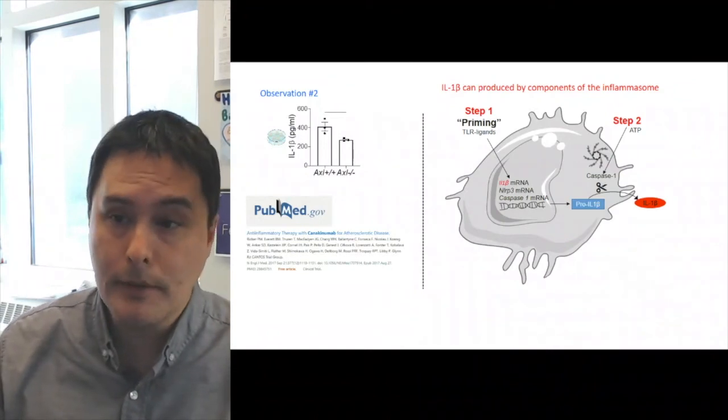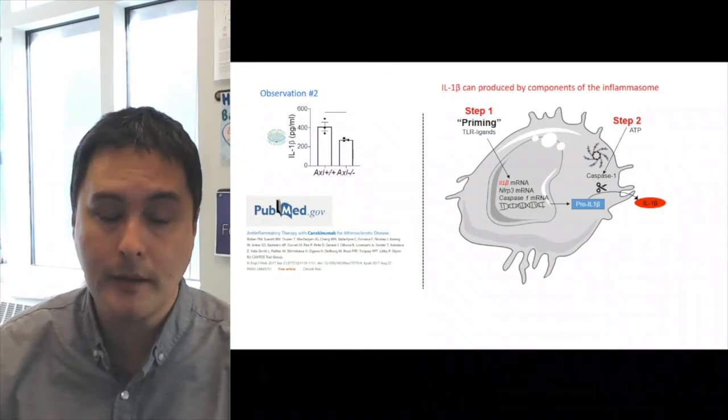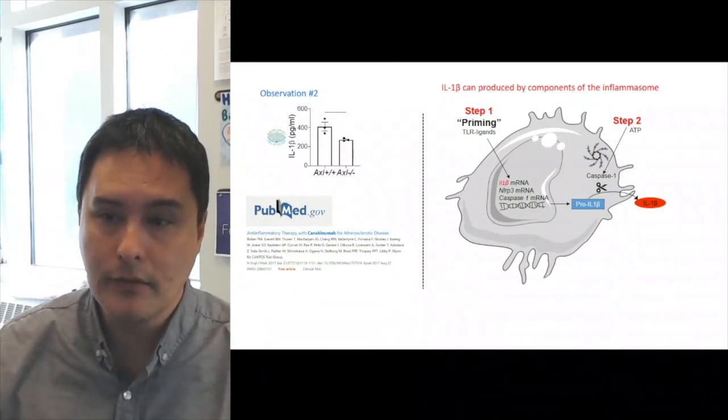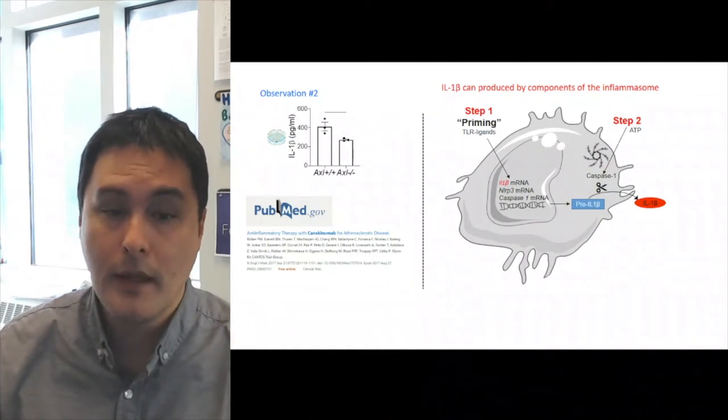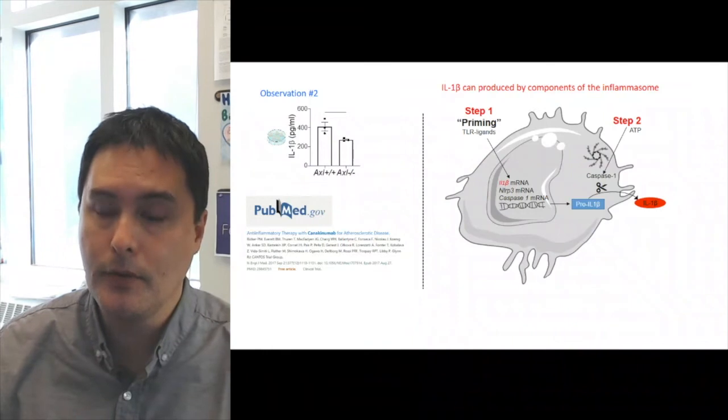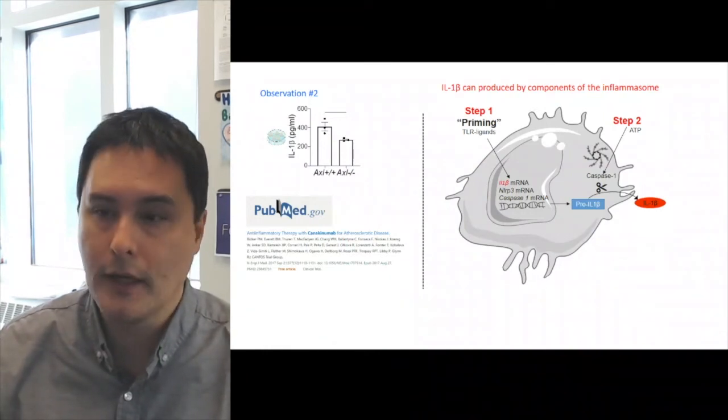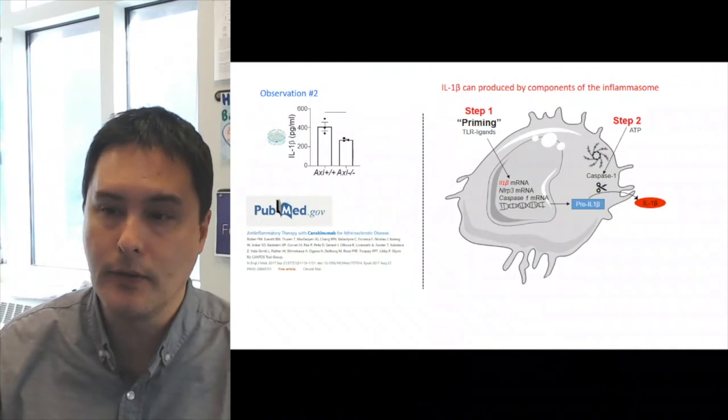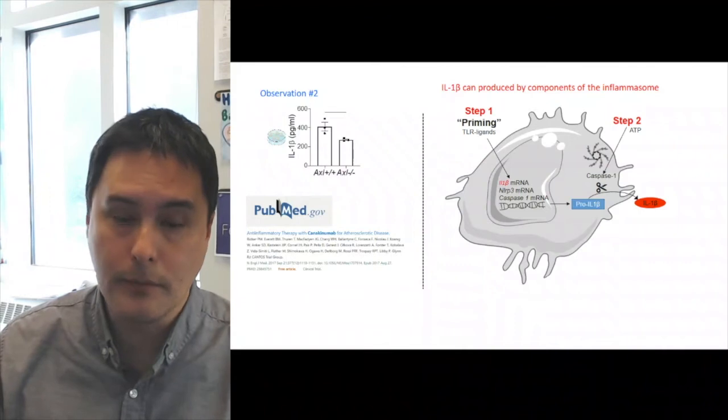IL-1 beta can be produced by components of the inflammasome. This involves two steps. The first which is priming by TLR ligands which can induce the transcription of components of the inflammasome and IL-1 beta. And step two is an activation pathway triggered by such factors such as ATP that can lead to activation of caspase 1 which can then convert pro-IL-1 beta into its mature form for secretion.